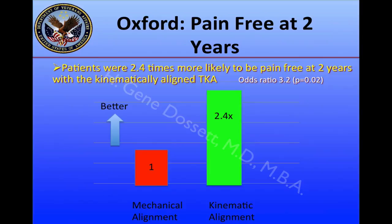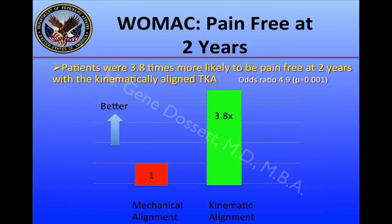The most important finding of our study occurred when we looked at the patients who were actually pain-free at two years. Both the WOMAC and the Oxford Knee Score have questions related to pain, and we took a look at patients who had perfect scores. With the Oxford Knee Score, patients were 2.4 times more likely to be pain-free at two years with kinematically-aligned total knee arthroplasty. Looking at the WOMAC pain questions, patients were 3.8 times more likely to be pain-free at two years with kinematically-aligned total knee arthroplasty.